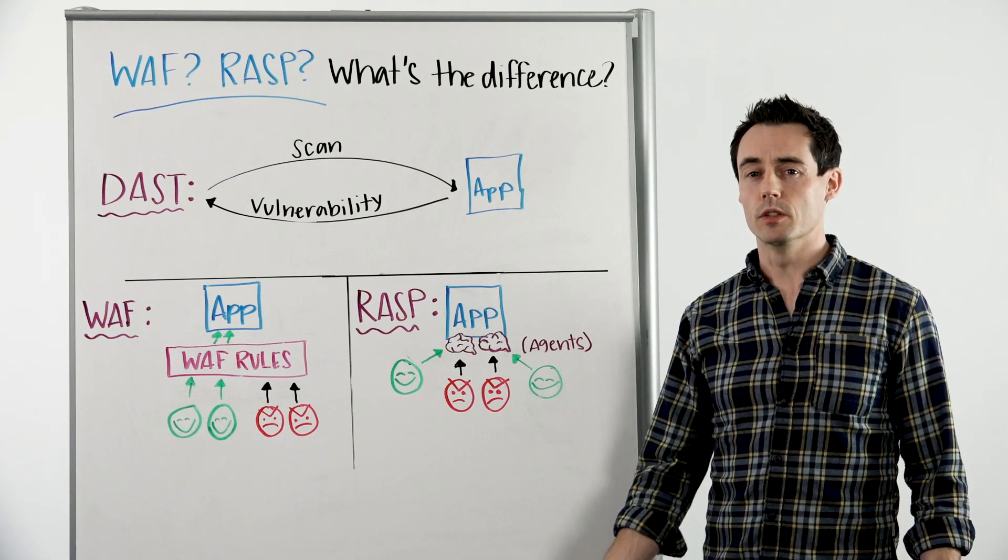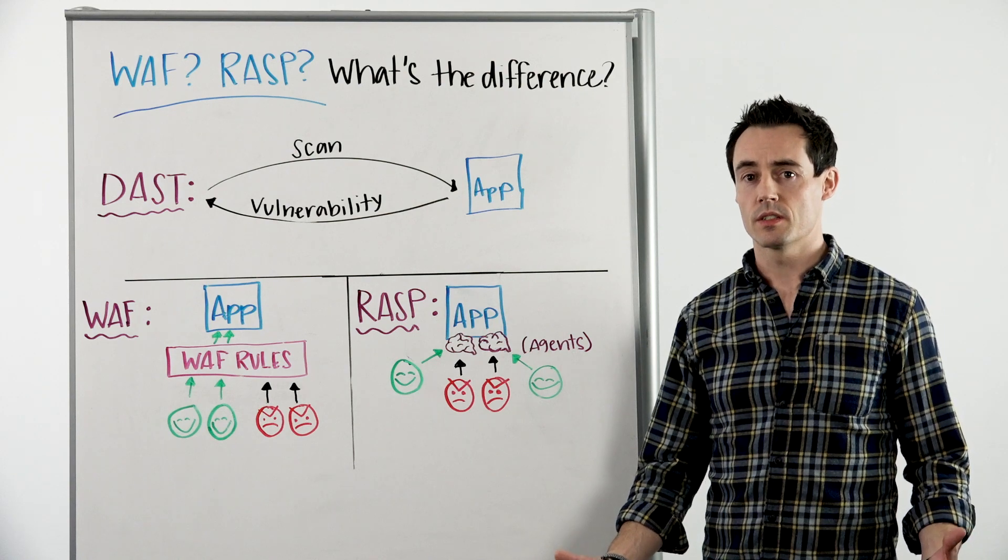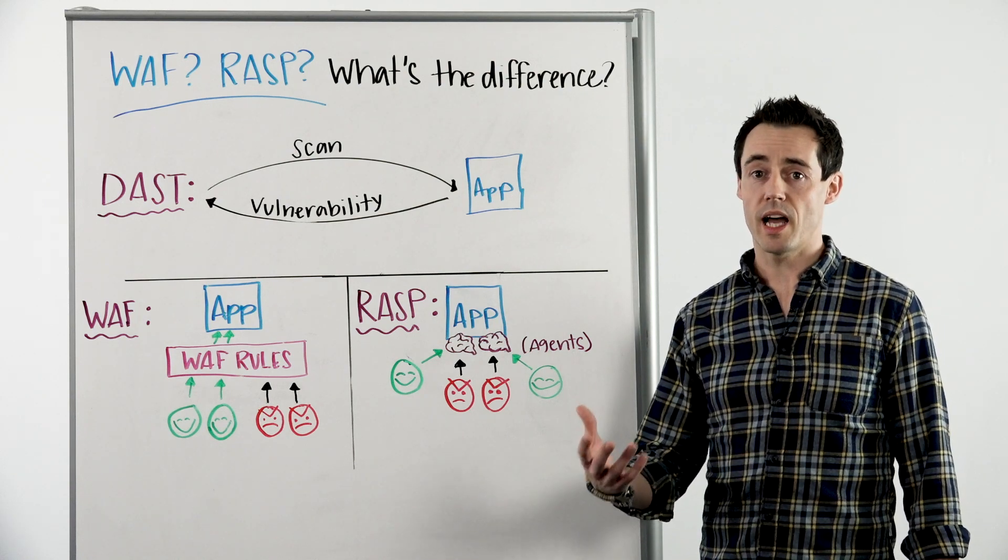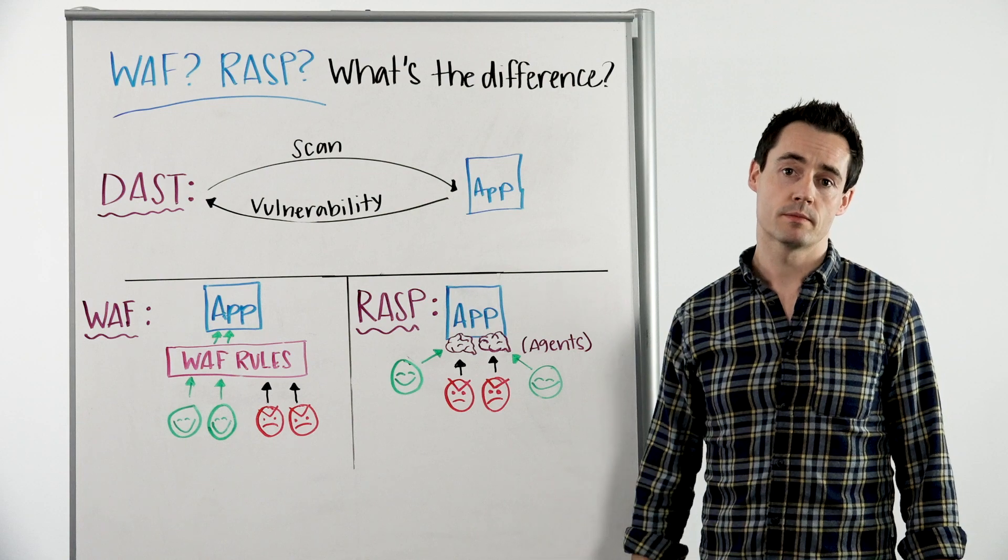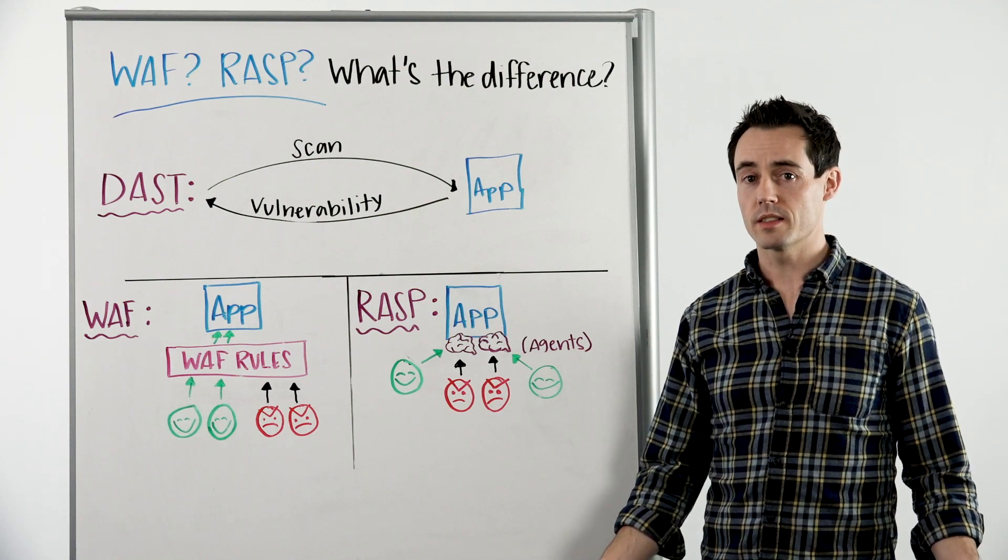So WAFs are cool, but they have their limitations, as rules to block attacks are based on models using the app behavior and the attack behavior. How can we address this? Get ready for another acronym.